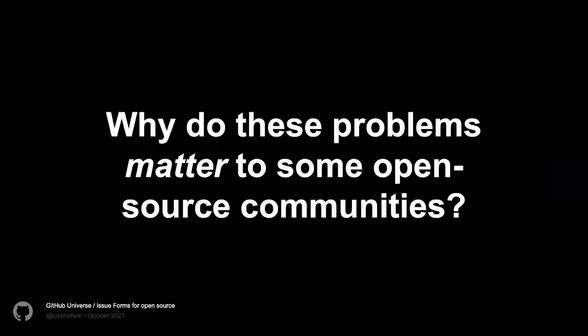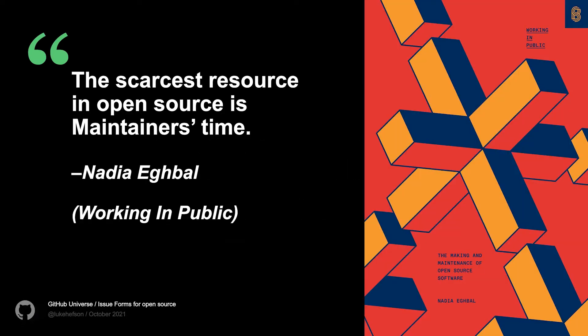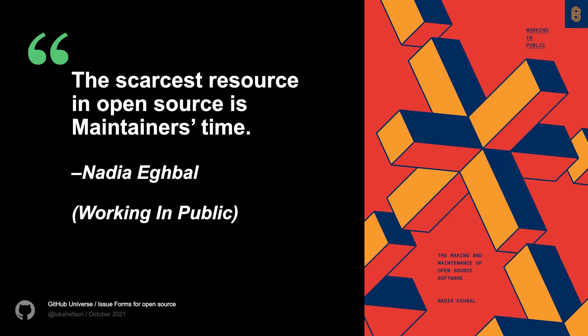So why do these problems matter to open source communities so much? In Nadia Eghbal's fantastic book Working in Public: The Making and Maintenance of Open Source Software, she describes a tragedy of the commons where open source is oftentimes created by people in their spare time — not necessarily their day job. When they have time, it's a passion of theirs, and that time is finite. But it's consumed by everybody. Nadia describes it very succinctly: the scarcest resource in open source is maintainer's time. And this is something that I think we really need to be conscious of.